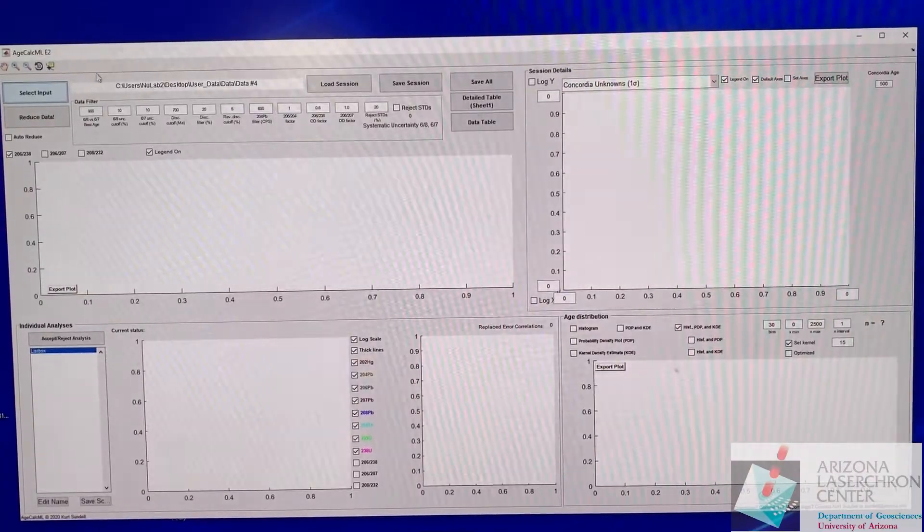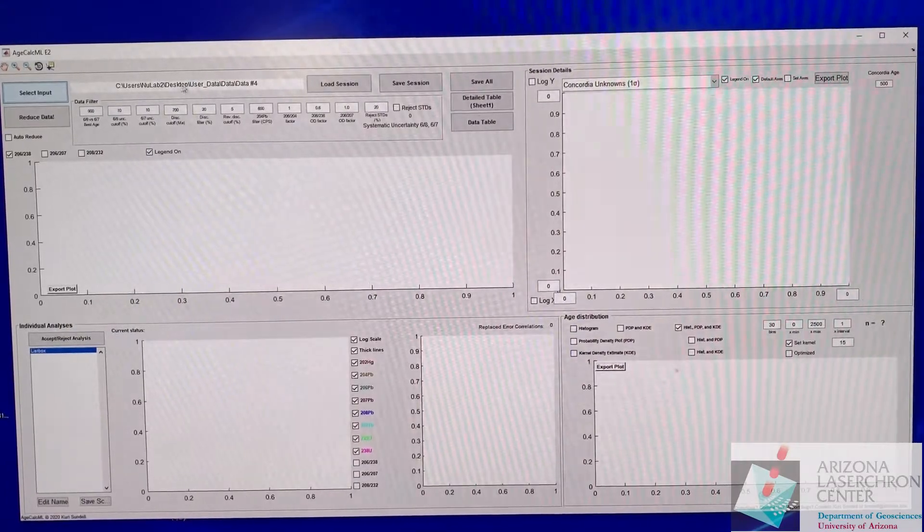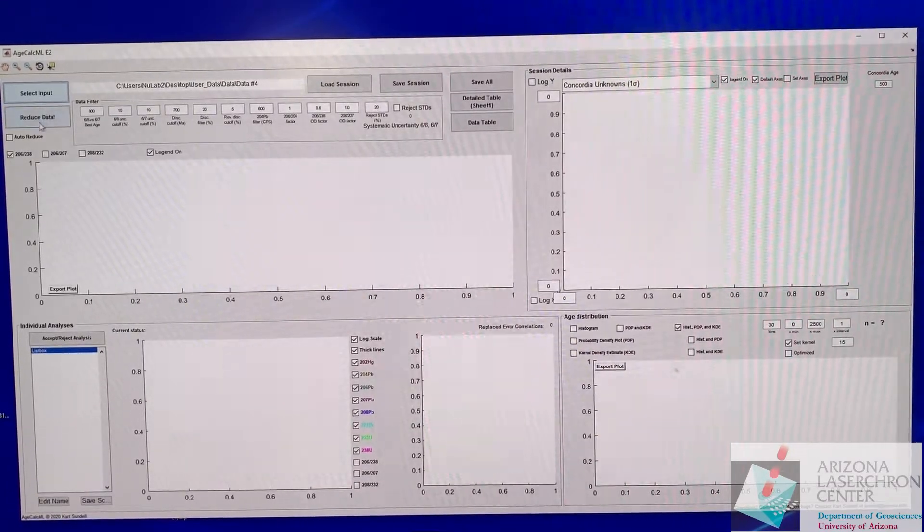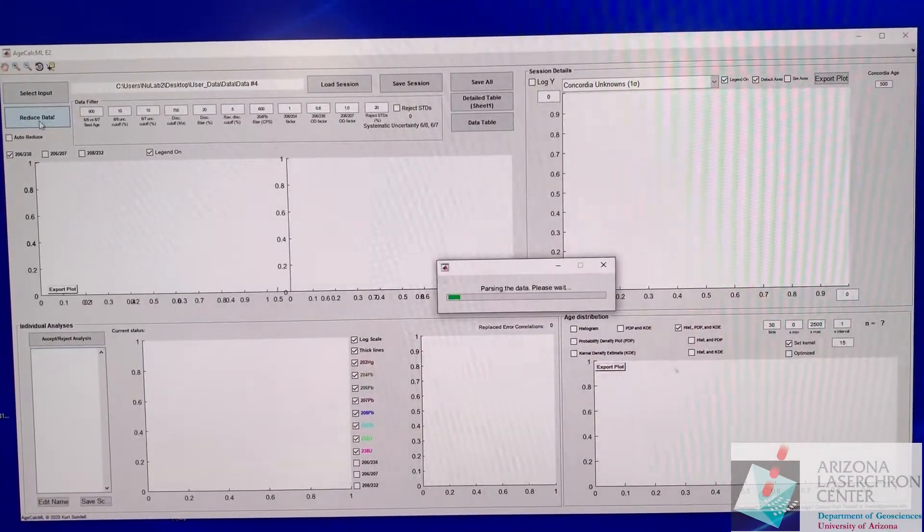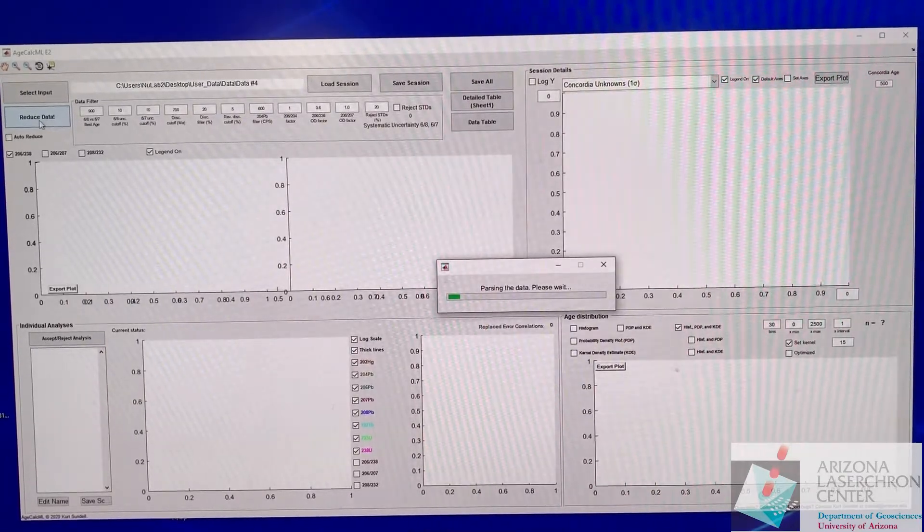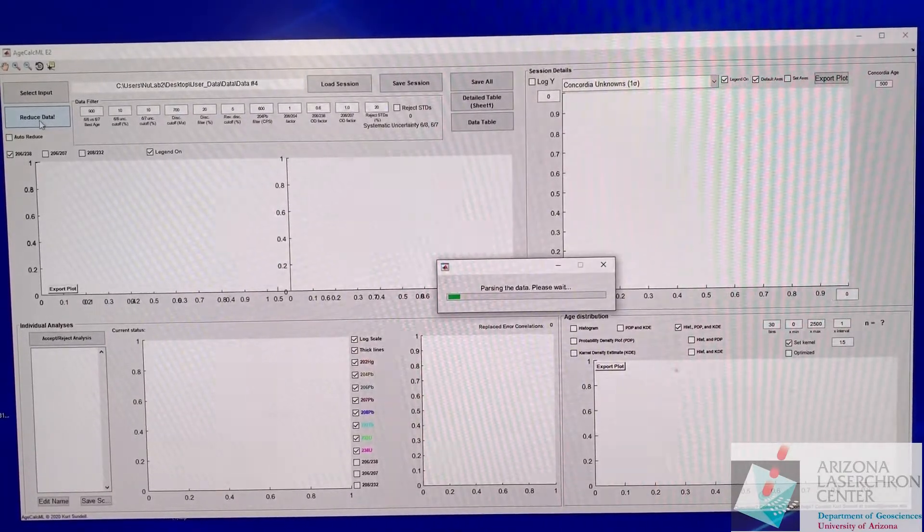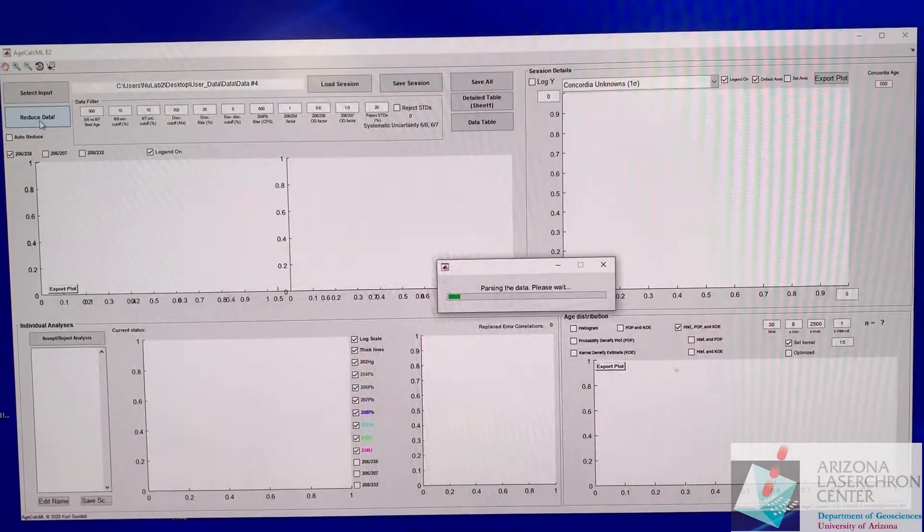You should see the file path populated here and now just click reduce data. This should take about 15-20 seconds to burst the data and then reduce the data.